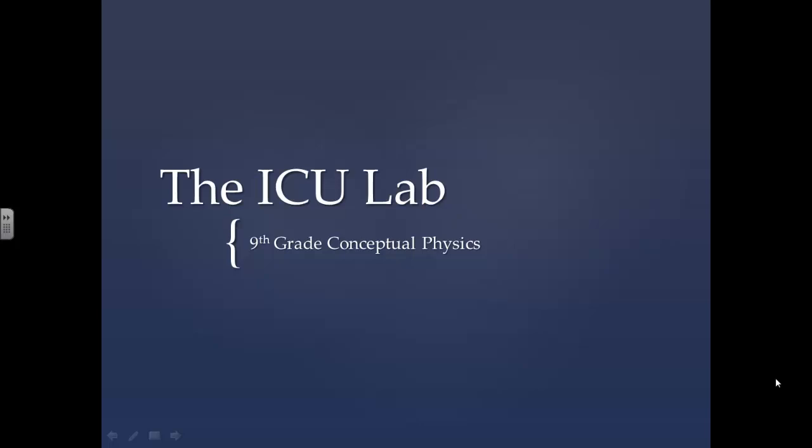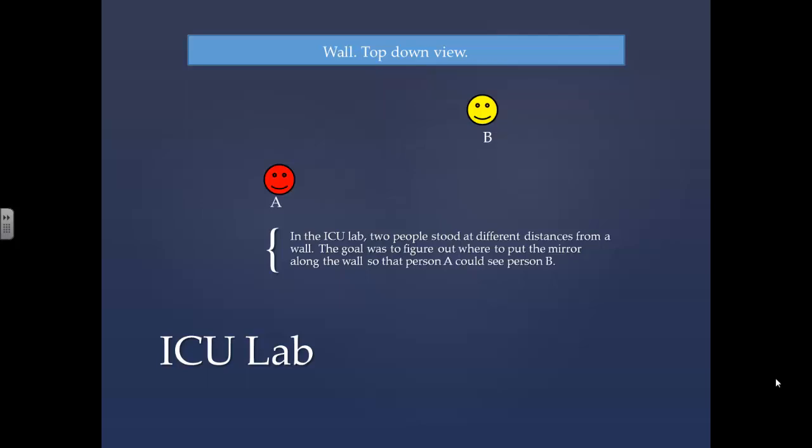The ICU lab, a 9th grade conceptual physics video. In the ICU lab, two people stood at different distances from a wall. The goal was to figure out where to put the mirror along the wall so that person A could see person B.